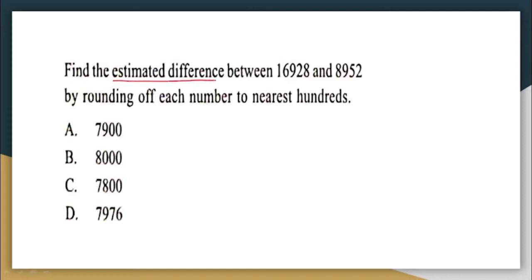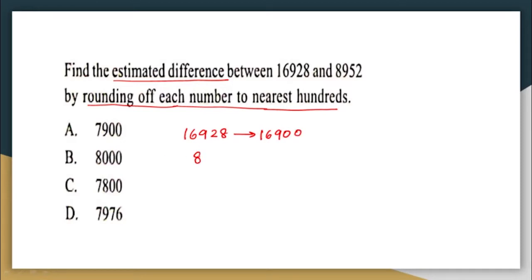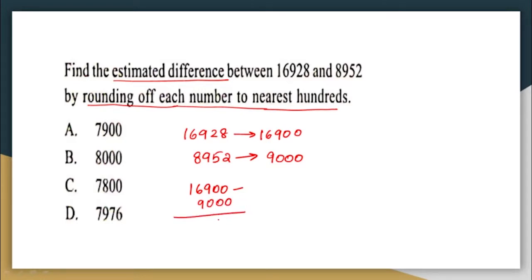In the question they have asked us to find out the estimated difference by rounding off each number to the nearest hundred. 16928 can be rounded off as 16900. Similarly, 8952 can be rounded off as 9000. The estimated difference is 16900 minus 9000, which is equal to 7900. The correct answer option is option A.